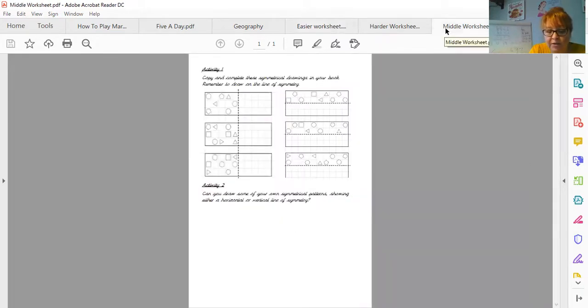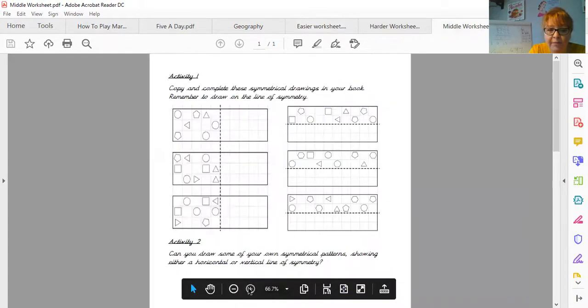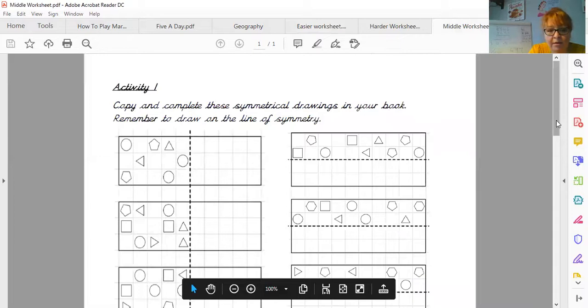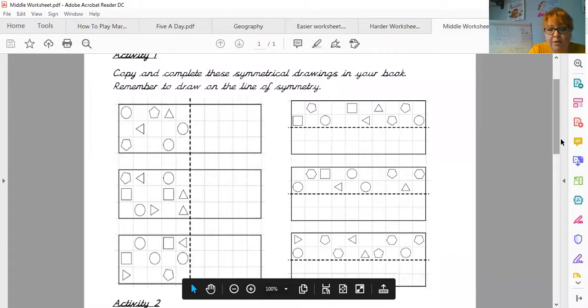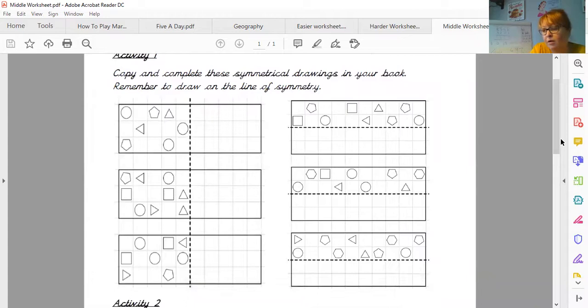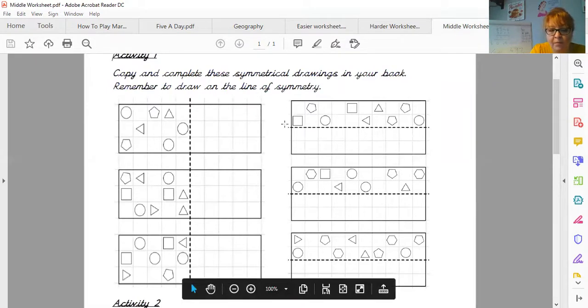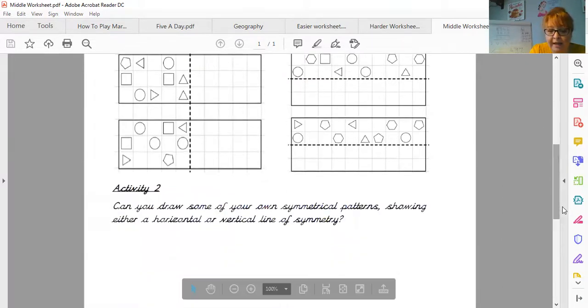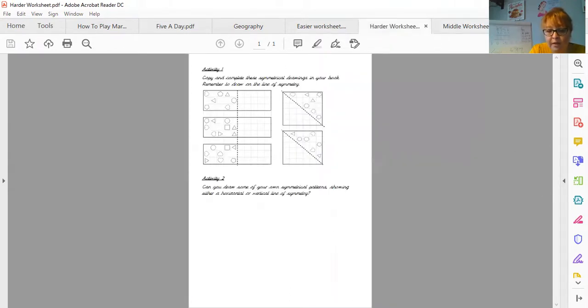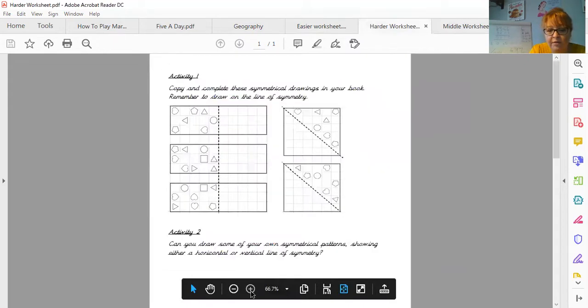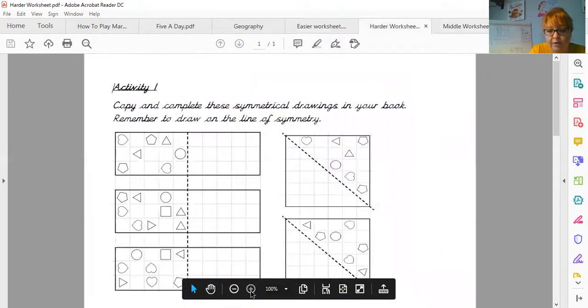The middle worksheet, so if you're feeling a little bit more adventurous today. So it says copy and complete. It would be quite hard to copy it into your book because it's lined, not squared. So again, you can do these top ones on the piece of paper and stick them in. And then again, horizontal and vertical line, can you come up with your own? And then the harder one, it just changes and you've got a vertical and you've got a diagonal line of symmetry. So be really careful with the diagonal lines of symmetry.